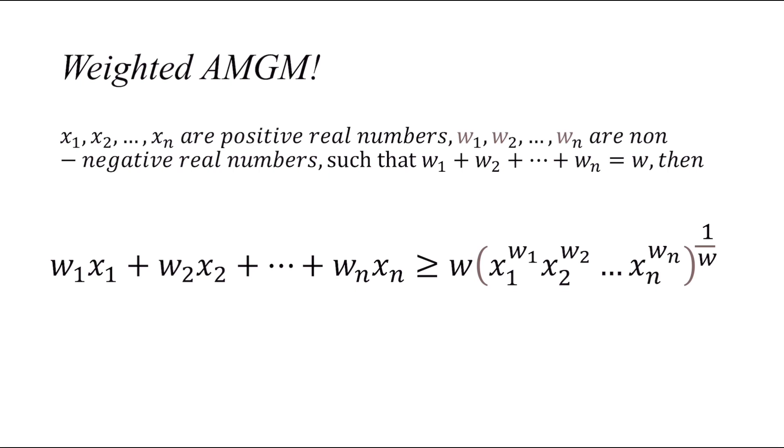w₁x₁ + w₂x₂ + ... + wₙxₙ ≥ w(x₁^(w₁/w) × x₂^(w₂/w) × ... × xₙ^(wₙ/w)). Equality holds if and only if x₁ = x₂ = ... = xₙ and w₁ = w₂ = ... = wₙ = 1/n. This might be a lot to digest, so feel free to pause the video and have a break.